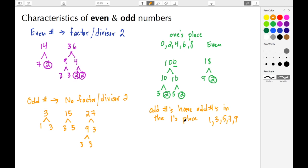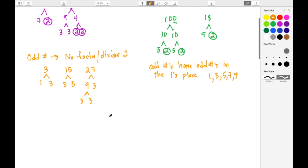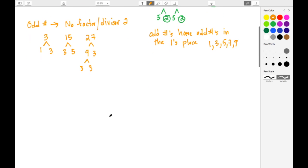If we look at some examples, we'll just keep it with the examples that we have here. Some other characteristics we'll look at would be the adding of even and odd numbers.